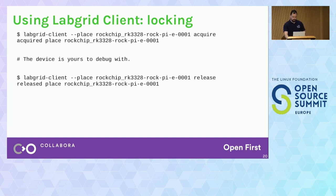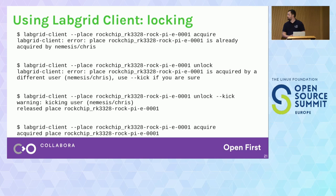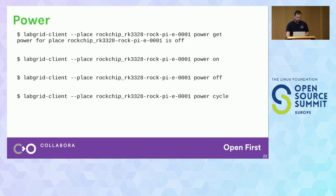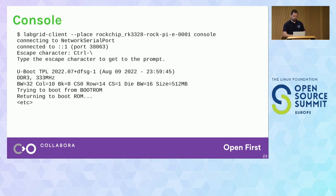LabGrid has a feature where you acquire a place for your usage and then release it when you're finished. There's also a way to wait for a board to be released as part of a CI job. The steps are: acquire the board, do what you like with it, then release it. If someone else has locked the board you can kick them off and acquire it yourself, though a timeout feature to automatically kick someone after a day would be nice. After acquiring, you can power on or off with 'labgrid-client power on/off', cycle power, and get a console with 'labgrid-client console' — it's that simple.